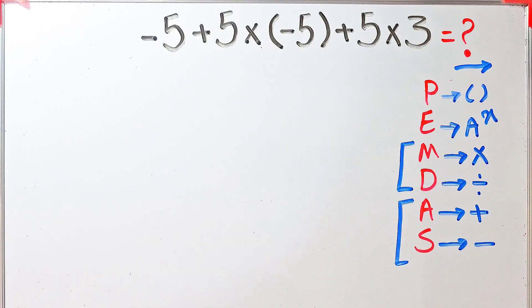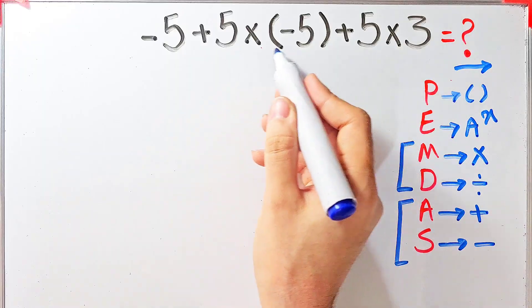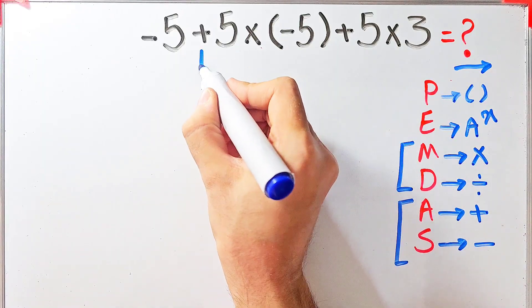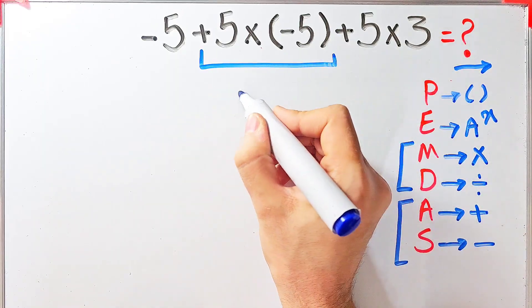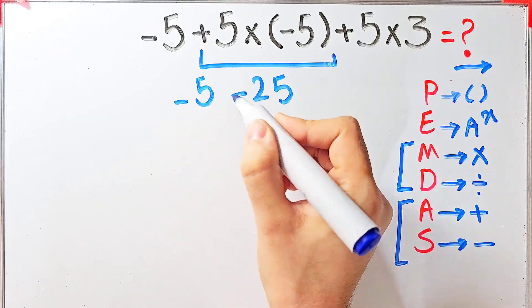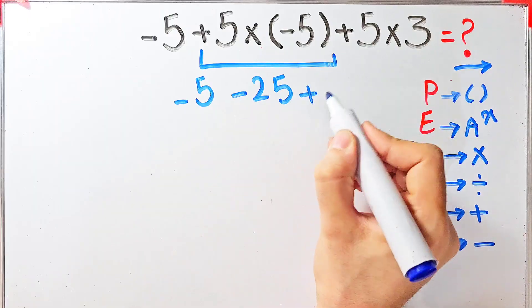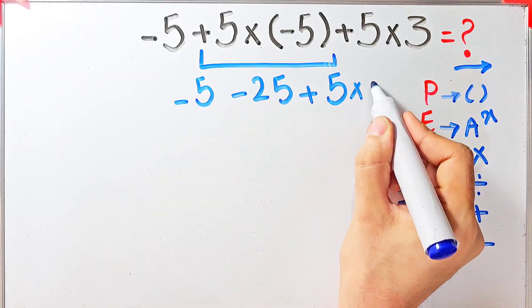According to the PEMDAS rule, first we simplify this multiplication: 5 times negative 5 equals negative 25. Now we have negative 5 minus 25 plus 5 times 3.